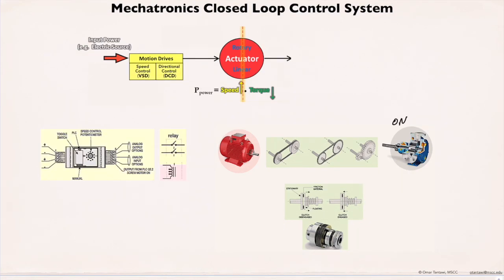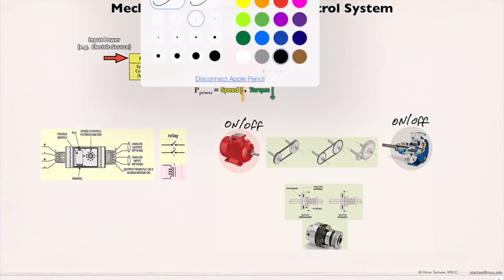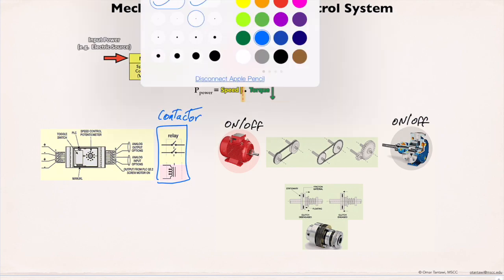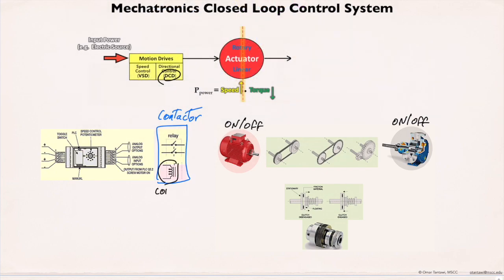Switching the pump on or off is done by switching the motor on or off, which is done by a motion drive called a direction control drive, or contactor. Switching the motor is controlled electrically using a coil attached on the contactor as one built-in device. When the contactor coil receives a signal from the system controller, the contactor contacts close and supply the motor with energy. If the control signal is disconnected, the contacts open mechanically by a spring, disconnecting the motor from the source.